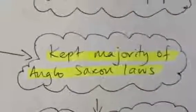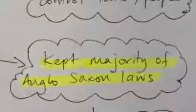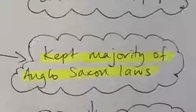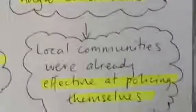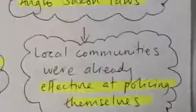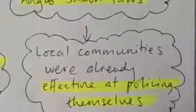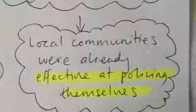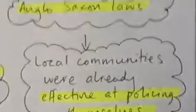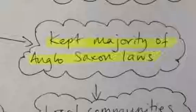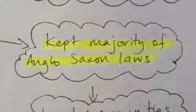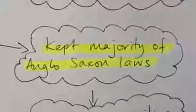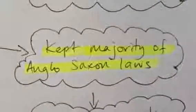The Normans kept the majority of Anglo-Saxon laws. There's several reasons for this. Firstly, it was too much trouble to replace them with different laws and more importantly, these laws actually worked. For example, things like tithings and hue and cry worked really well, cost the Normans nothing and were really effective at policing local communities. So there was no desire for the Normans to replace any of the Anglo-Saxon laws that worked.